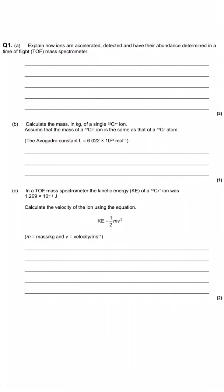The question begins by setting the scene about the time-of-flight mass spectrometer. We are asked to explain how ions are accelerated and detected, and have their abundance determined in the mass spectrometer. So first of all the acceleration,